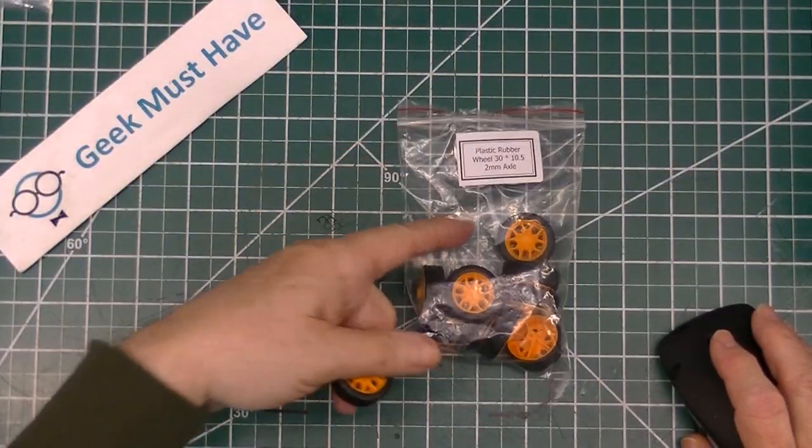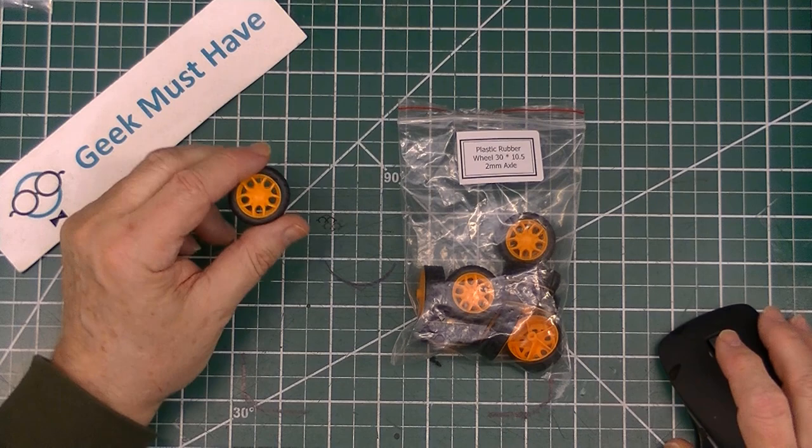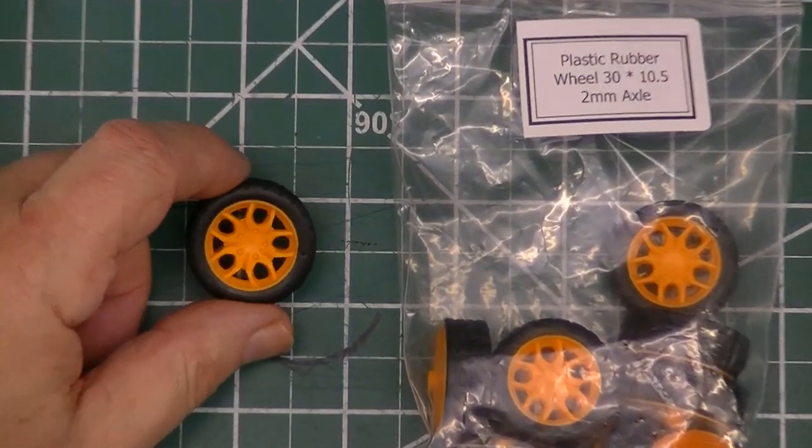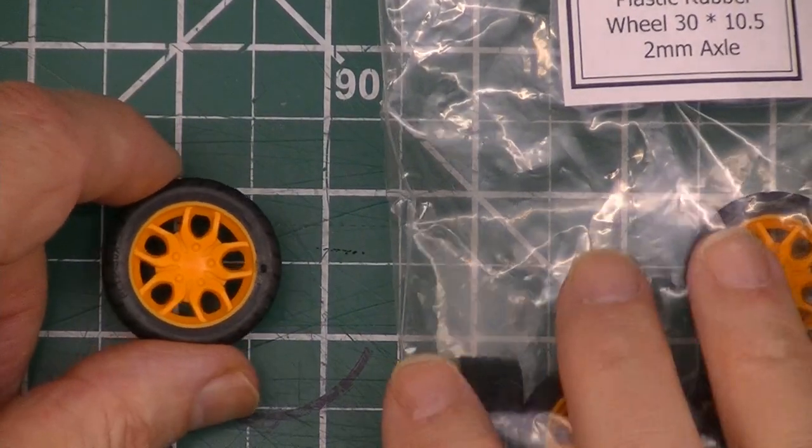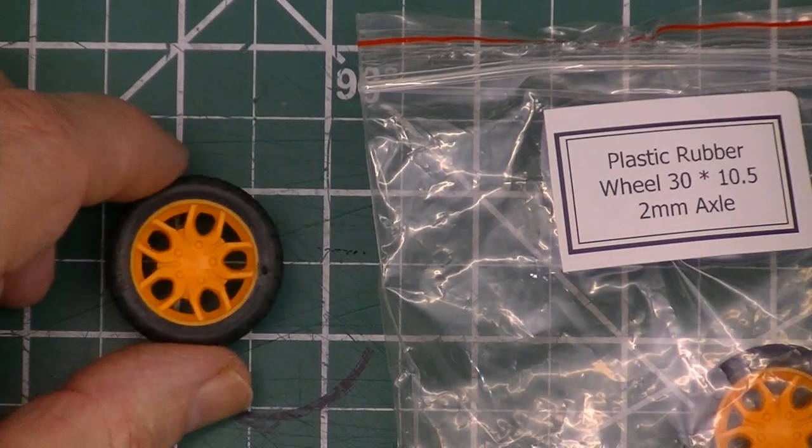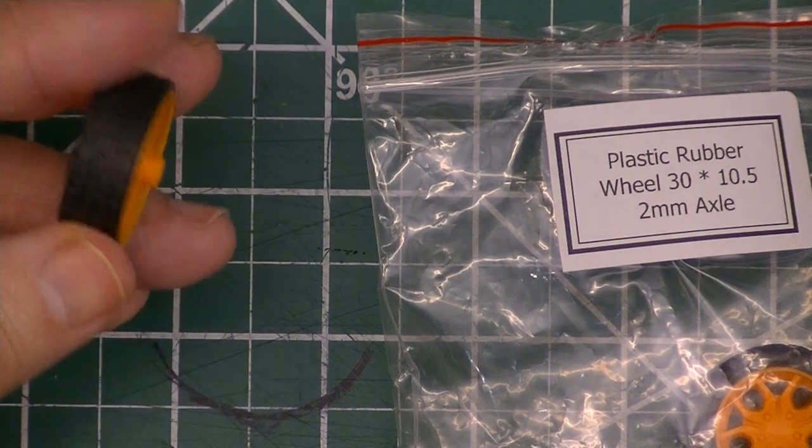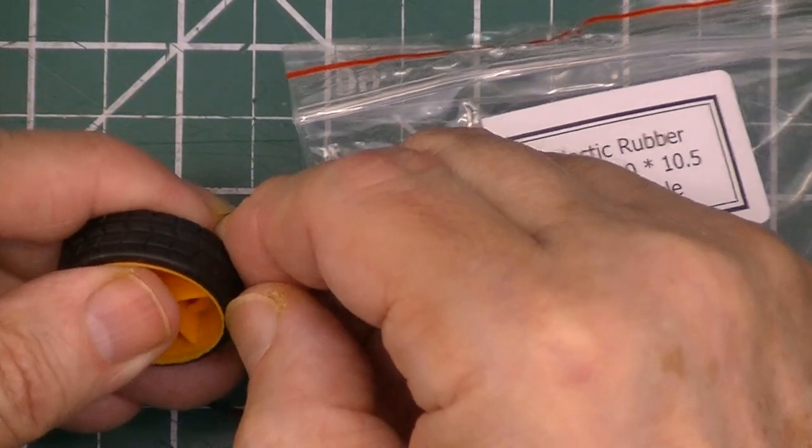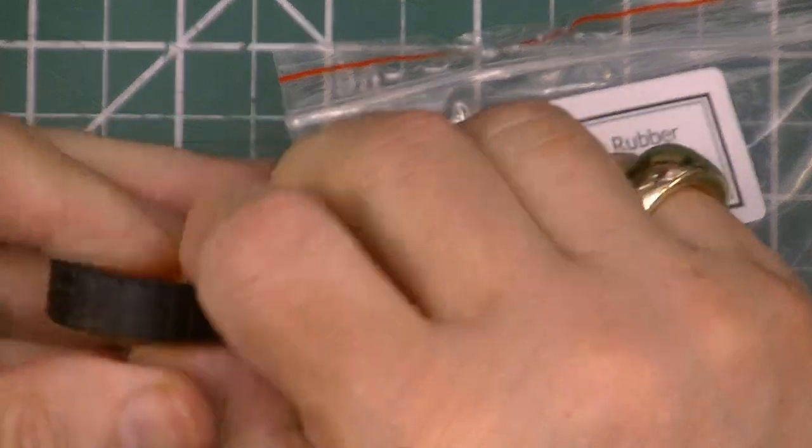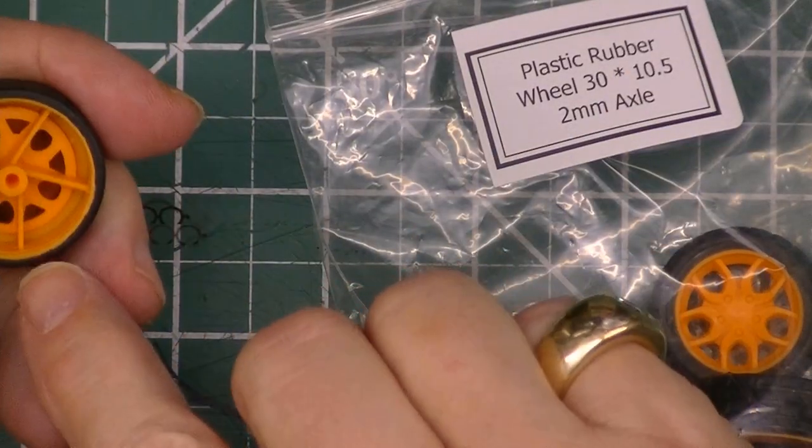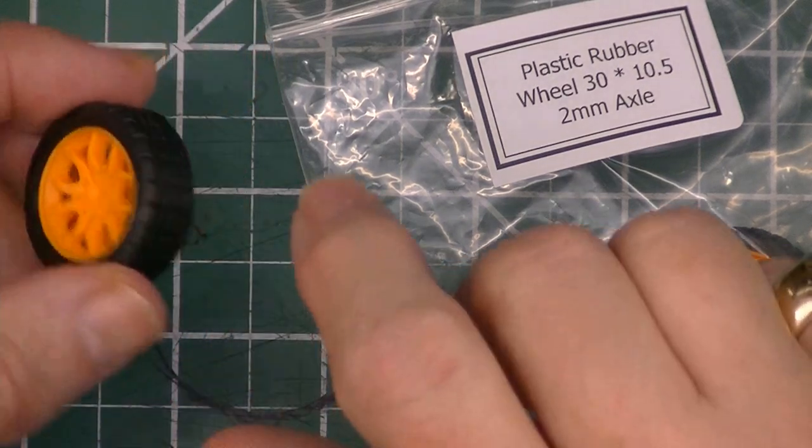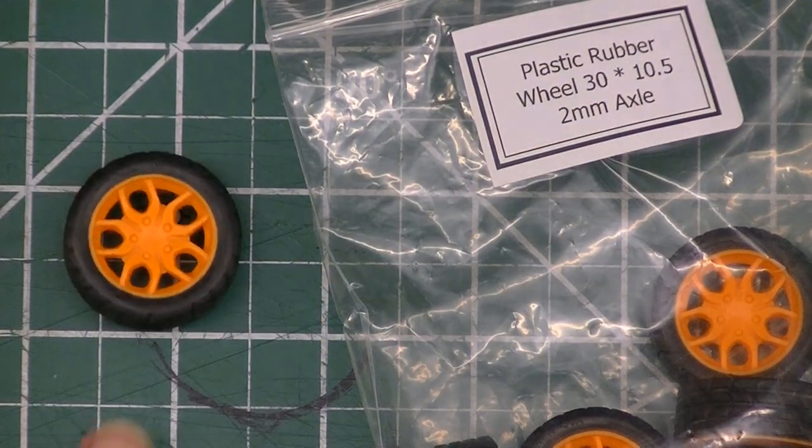The next items are some plastic and rubber wheels. These are a little better quality. I kind of like the orange color on them. They are 30 millimeters across with a 10.5 millimeter tread on them. If you pry hard enough, you probably could get the tires off. It's a 2 millimeter axle for a 2 millimeter shafted motor. These are kind of nice looking.